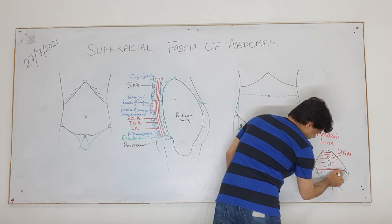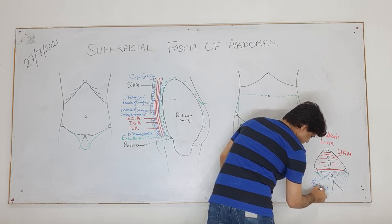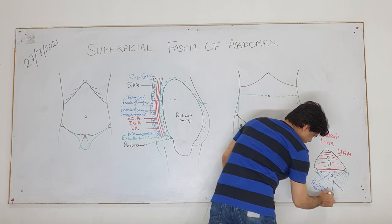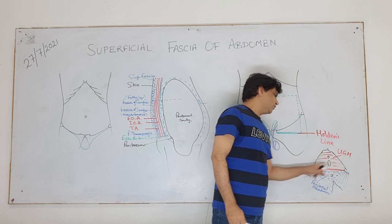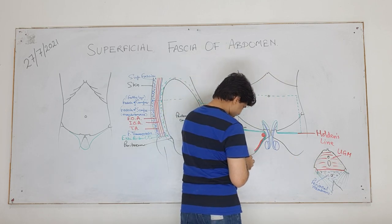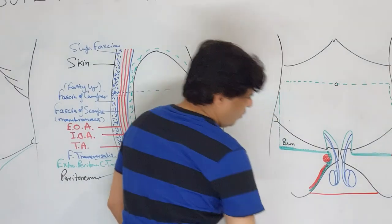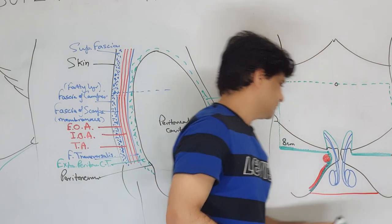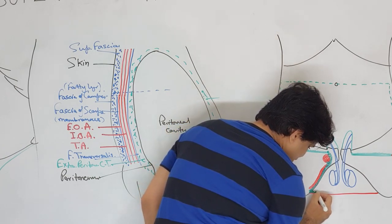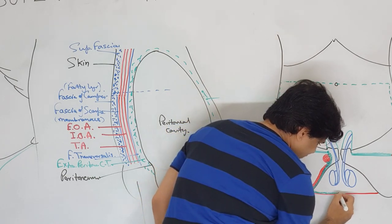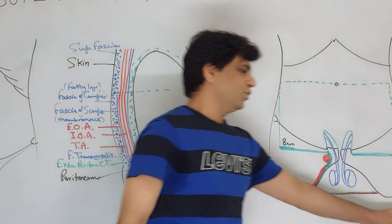This is the perianal membrane. The posterior border of the urogenital membrane - this fascia of Scarpa when it reaches down to the urogenital membrane, it fuses with the posterior wall of the urogenital membrane on both sides.